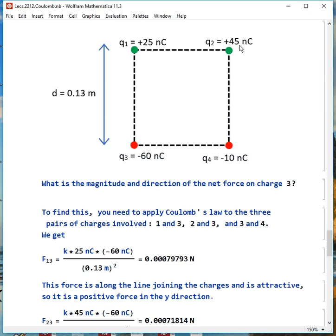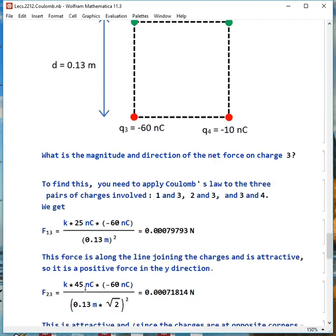Next, between 2 and 3, this will also be attractive. It will be at a 45 degree angle above the X or to the right of the positive Y. Because this is also attractive, we put in the numbers 45, -60. Notice the distance is √2 longer this time, so we've got to include that. We get 0.000718 Newtons.